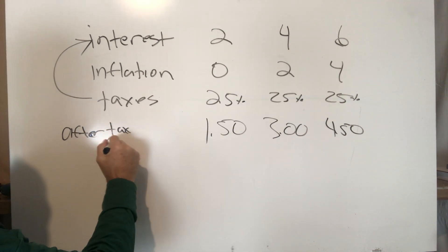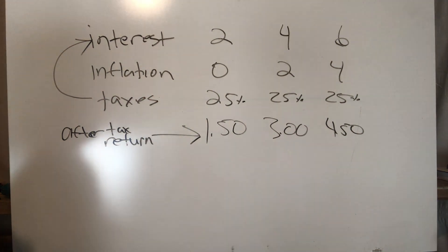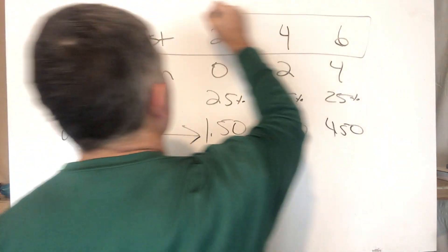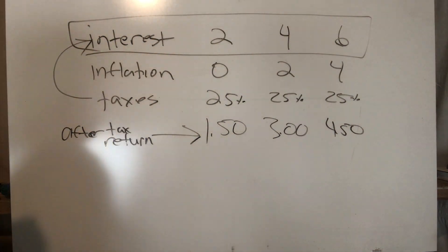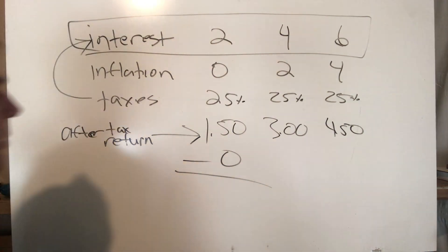So here we pay tax on 2, we pay tax on 4, we pay tax on 6. That's our after-tax return because we don't pay tax on the net of inflation; we pay tax on the gross interest base that we're getting.